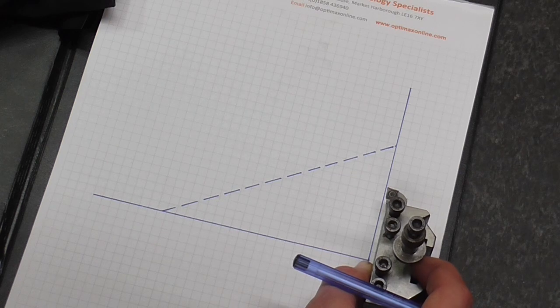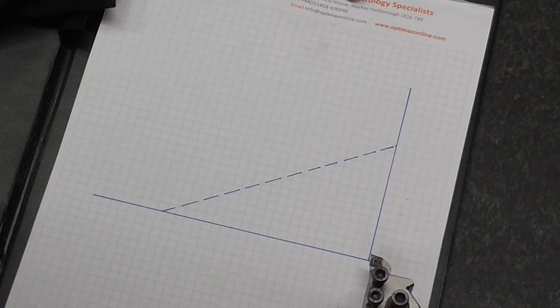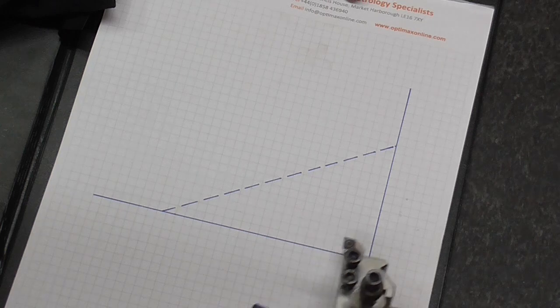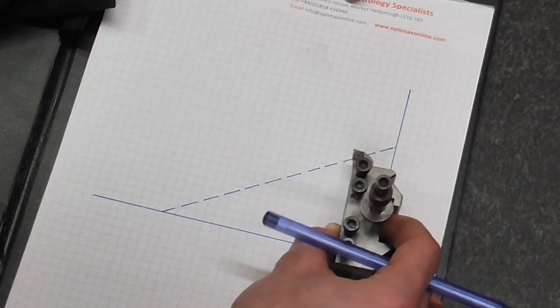Bring the tool in to the end face and reference the saddle on a known face. Once you've done that you've then got the zero point, and from there you can increment in and top slide across, increment in top slide across, increment in top slide across.